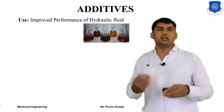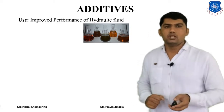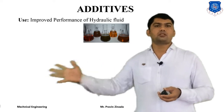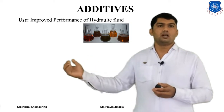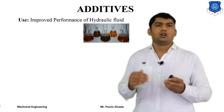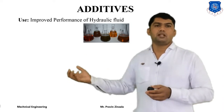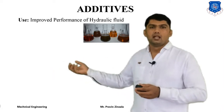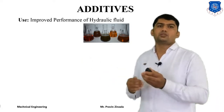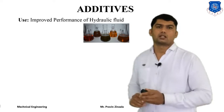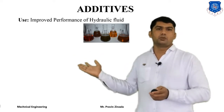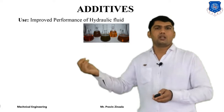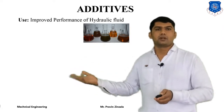Now we will discuss additives. Additives are used to improve the properties of hydraulic fluid. During production, not all required properties may be met, so additives improve the performance. For example, water as a hydraulic fluid has corrosive nature and non-lubricant properties, so additives are added to improve its performance. Additives can also increase the flash point temperature or make the fluid fire resistant.